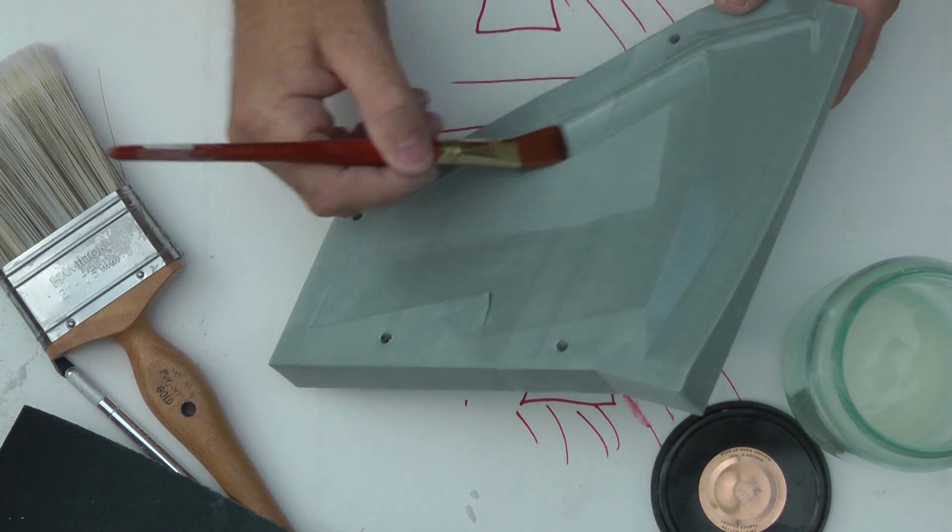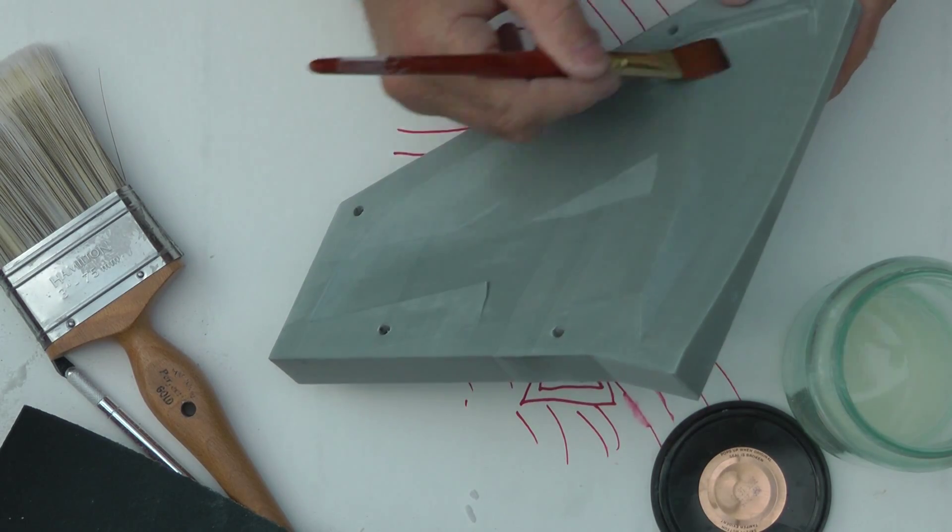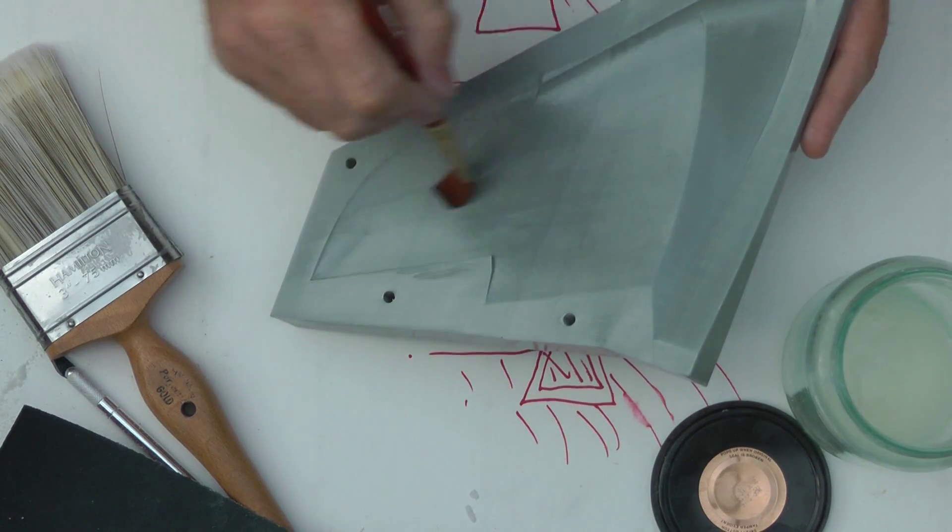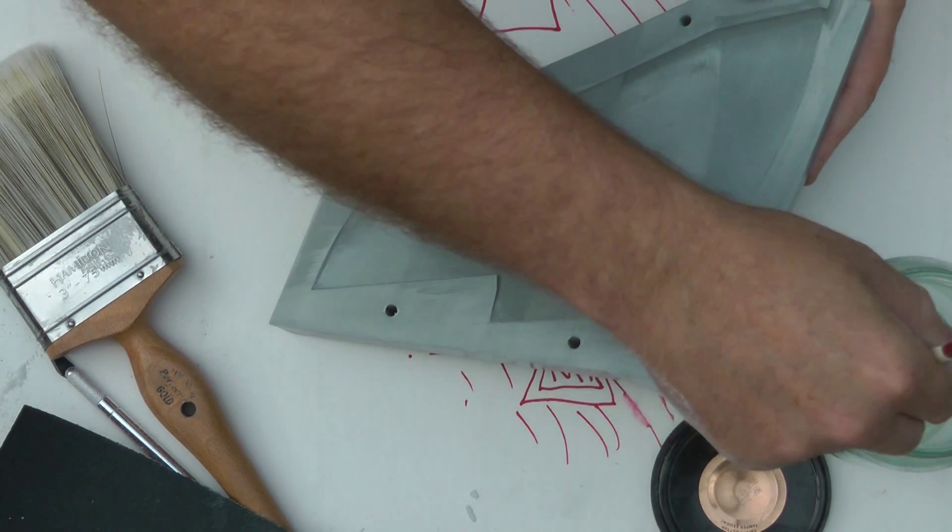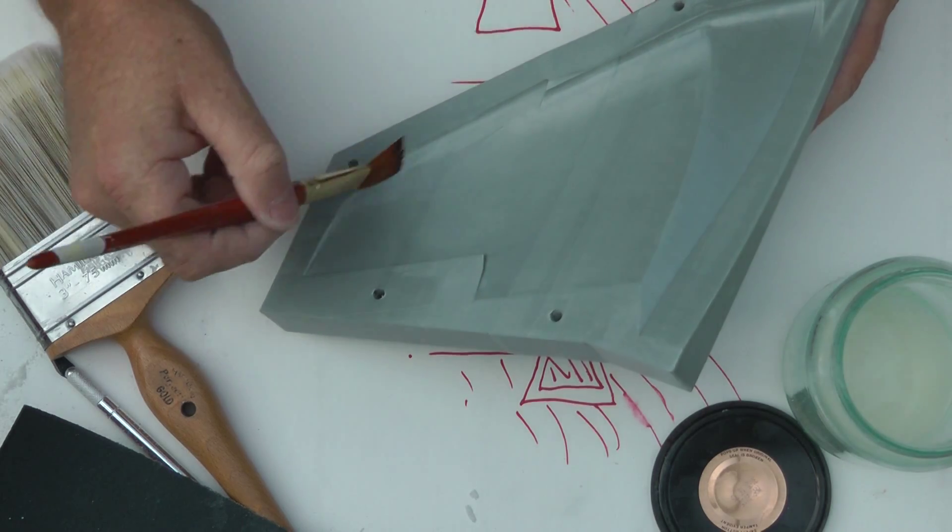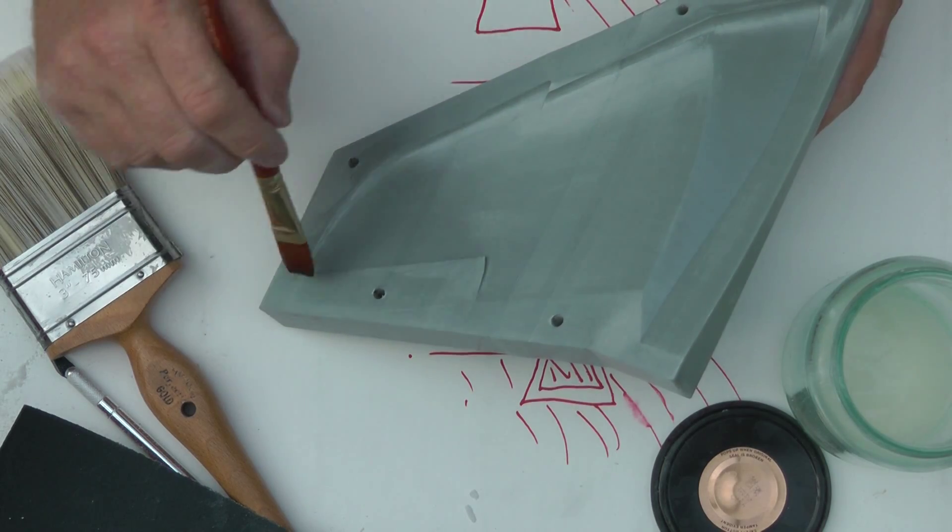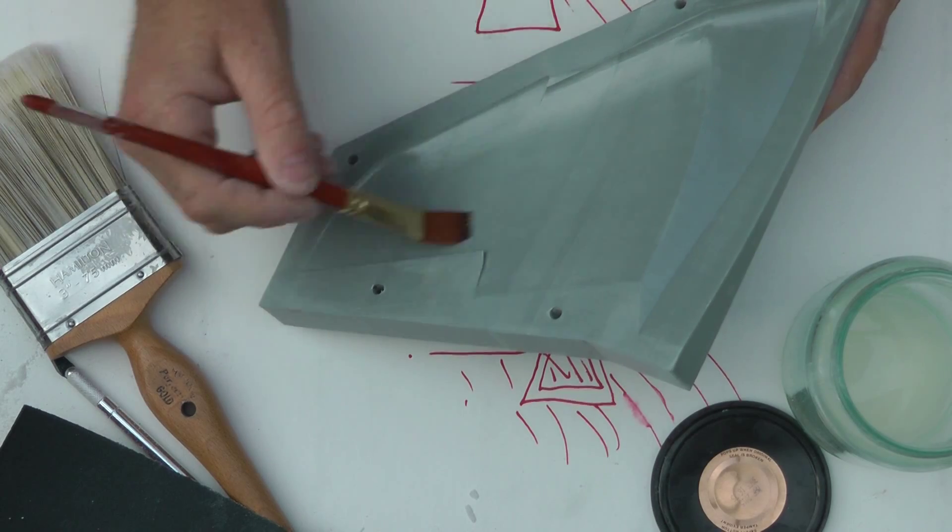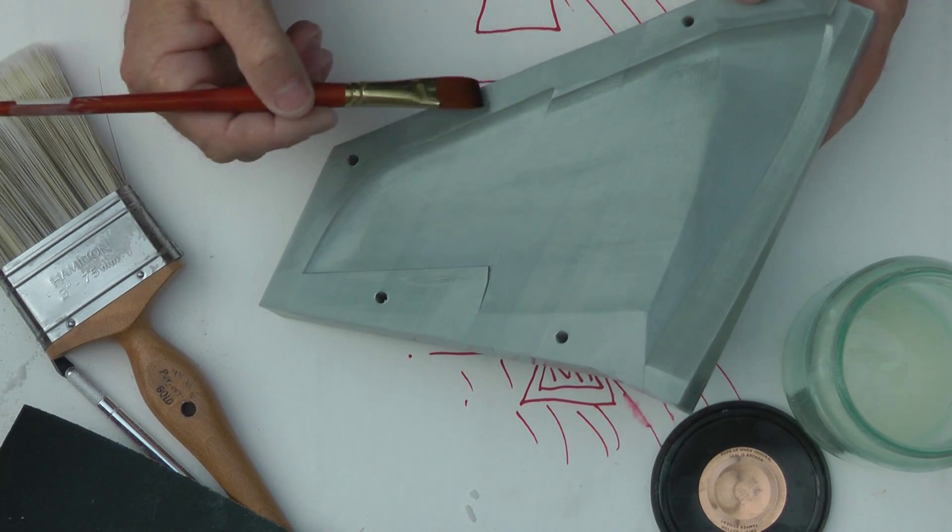The 240 sanding is definitely the longest, the one that takes the longest time. Once that's done, we'll go to 400 next, and this will sand off quite quickly, the 400. You want to make sure you do a good job with the 240, your first coarse sandpaper, because the finer grits come later on.